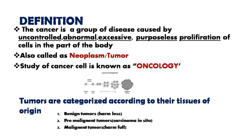The next type is pre-malignant tumor. Here 'pre' means before, and 'malignant' means harmful tumor. At present they are not harmful, but in future they may become malignant or cancerous. Generally after some time they become cancerous, and this is also known as carcinoma in situ.